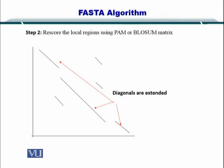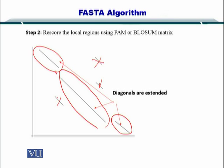So next, you select the longer diagonals. So you select these three and you ignore these ones. And then you want to extend these diagonals. So as you can see, this portion is disconnected and this portion is disconnected. So you want to extend these diagonals such that they are joined.